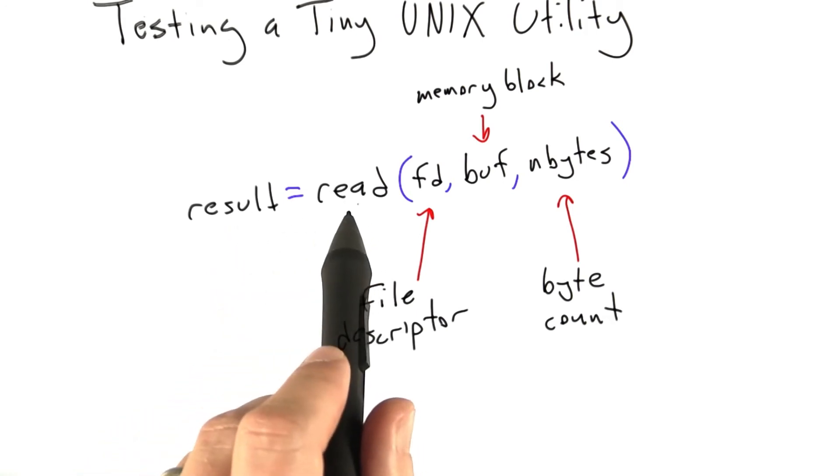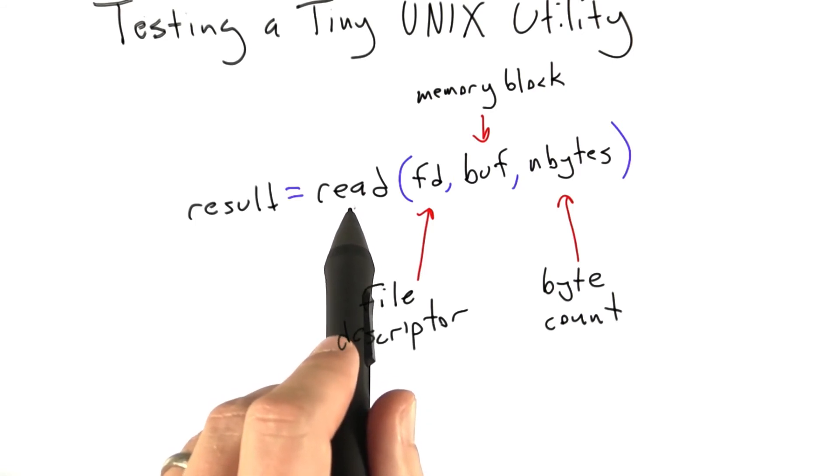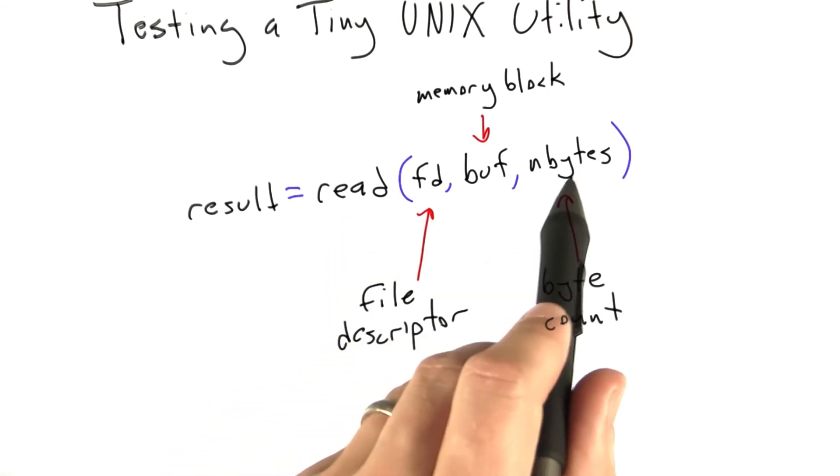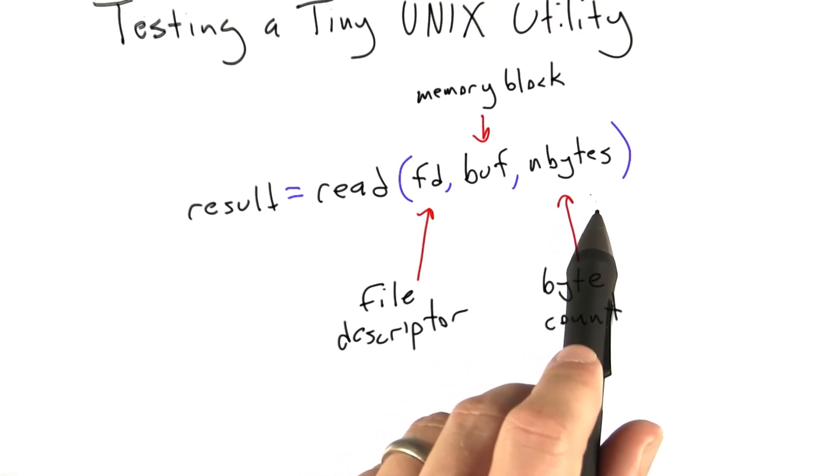But the fourth possibility, and this is one that's pernicious and that a lot of programmers get wrong, is that read can return a number of bytes less than the number you asked for. This isn't a failure. This doesn't represent any sort of out of memory condition, or end of file, or anything like that. It just means you need to try again.